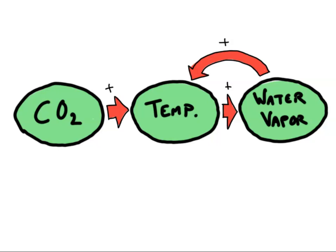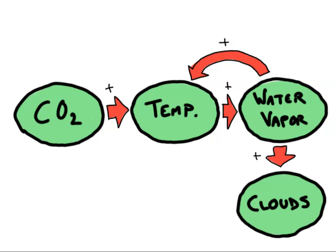A related feedback in the climate system comes from the formation of clouds. When that warm air full of water vapor rises in the atmosphere, it's going to cool off. And eventually, it may cool enough that it can't hold all that moisture anymore, and so the water will condense out into clouds.